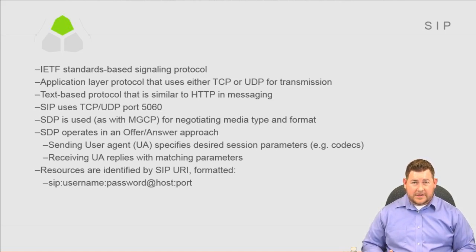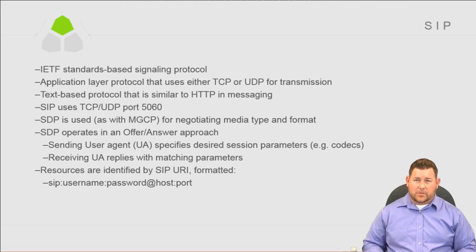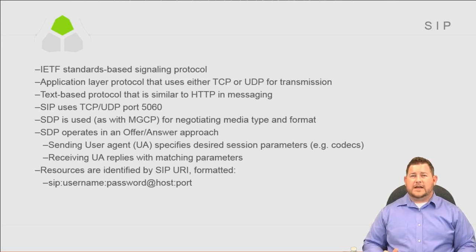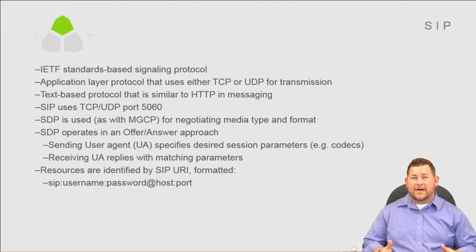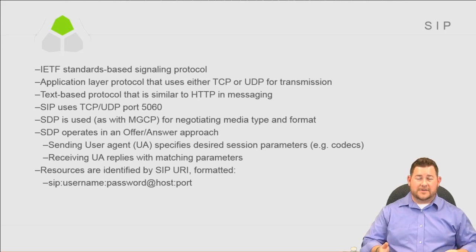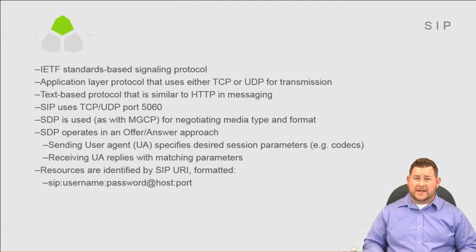SDP operates in an offer-answer approach. When sending an initial SIP invite with an SDP, you're offering the codecs you support for that call — such as G.711, G.729, iLBC. The other endpoint answers back with what it supports. If the other end only supports G.729, that's what the call will use. It's pretty easy to see in the debug going back and forth. Resources are identified by SIP URI, which is different from the Directory URI — it starts with SIP colon username, possibly a password, at host colon port.